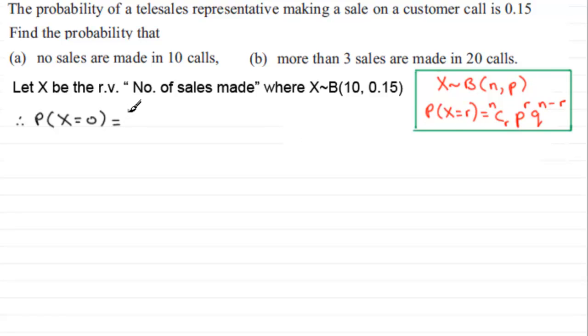10C0, multiplied by 0.15, our p-value, to the power 0, multiplied by the probability of failure, 1 minus p. We often call it q, as I mentioned earlier.